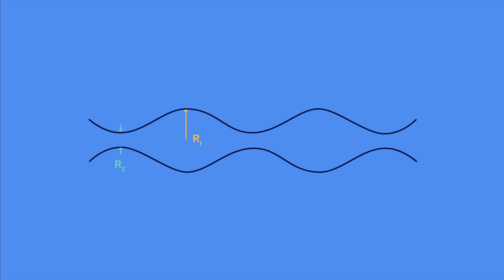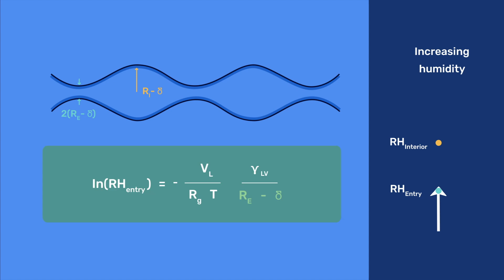We can illustrate this with a series of ink bottle pores where the interior radius, R interior, is much larger than the pore entry radius, R entry. At low relative humidity, only a film of thickness delta is adsorbed. As humidity is raised, condensation first occurs in the pore entry, or neck, which is essentially an open-ended tube.